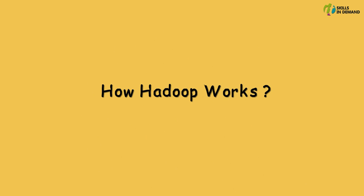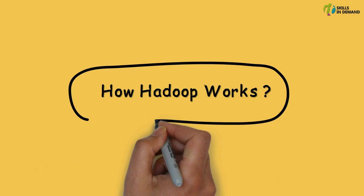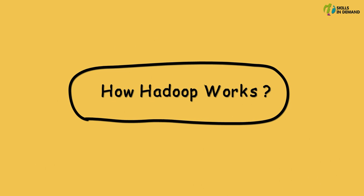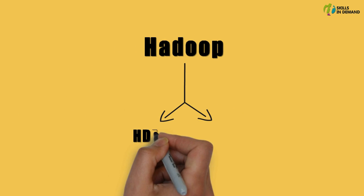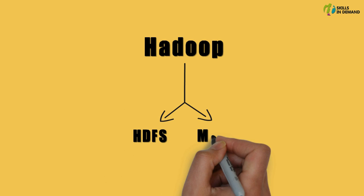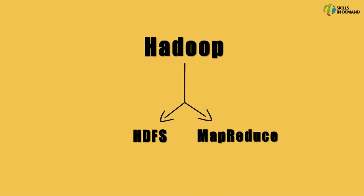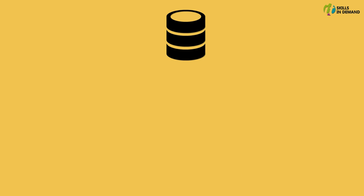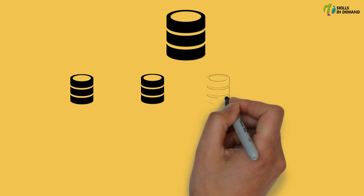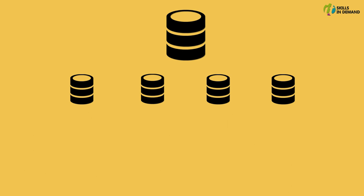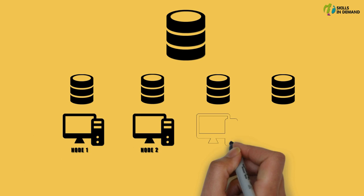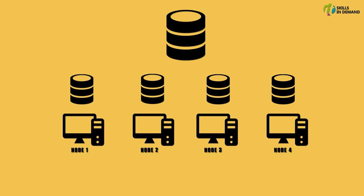In this session, let us try to understand how Hadoop works. The Hadoop framework comprises of the Hadoop Distributed File System and the MapReduce framework. Let us try to understand how the data is managed and processed by the Hadoop framework. The Hadoop framework divides the data into smaller chunks and stores each part of the data on a separate node within the cluster.